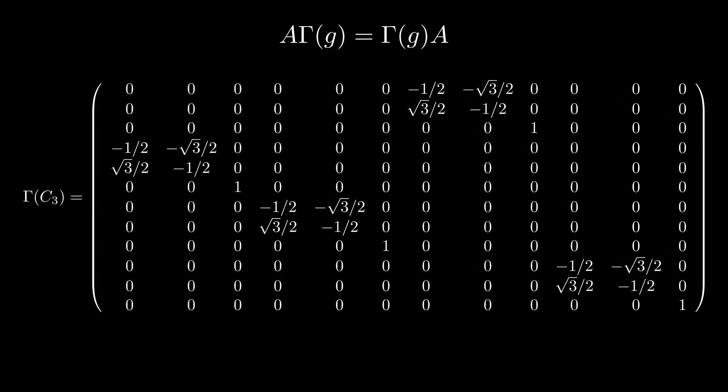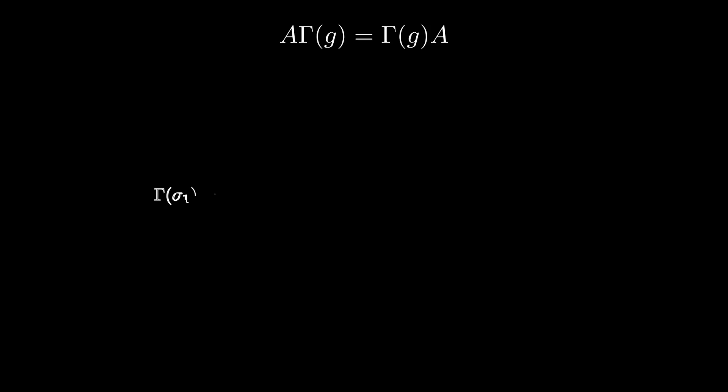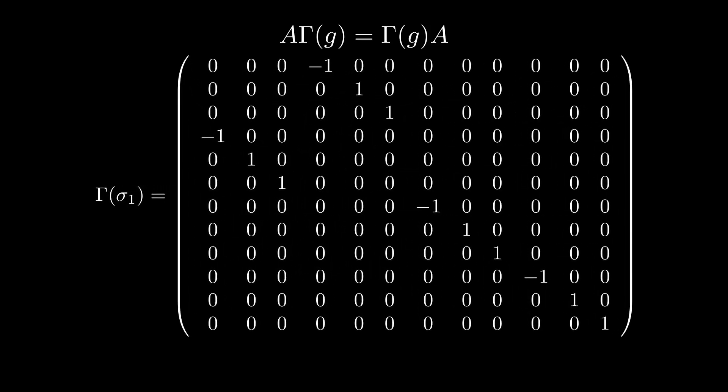We also saw the reflection across the x equals 0 plane sigma1, whose compact matrix gamma of sigma1 is written as follows. Again, it might be useful to clarify the compact notation. As said earlier, all these transformations form a representation of the C3V group.